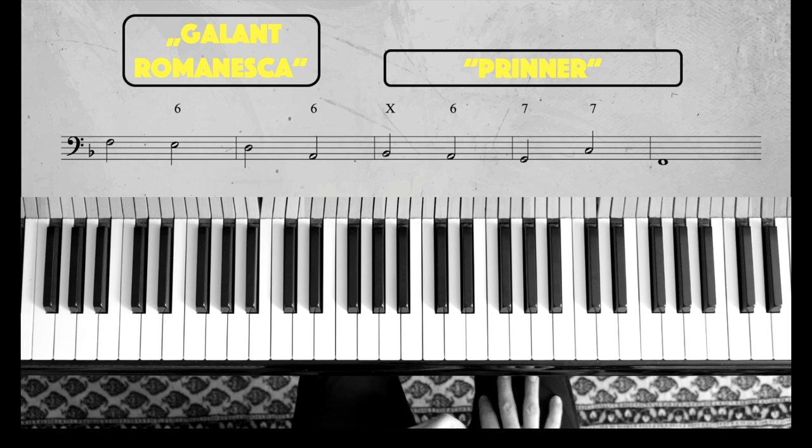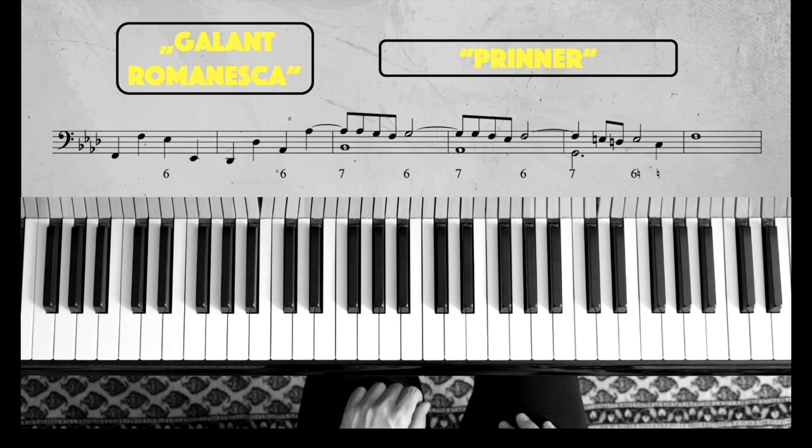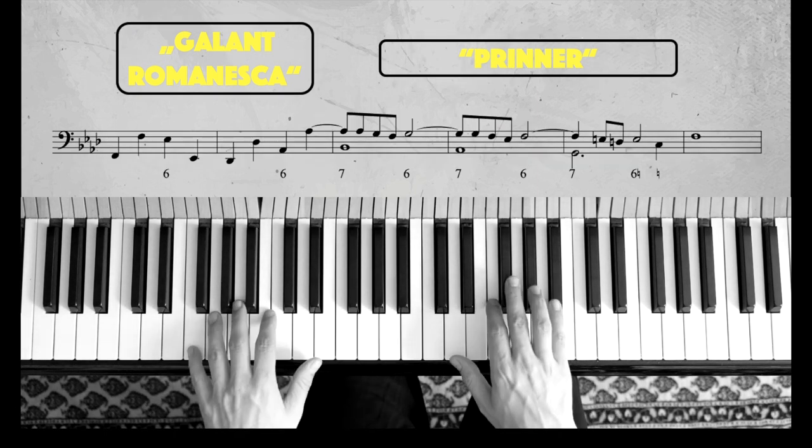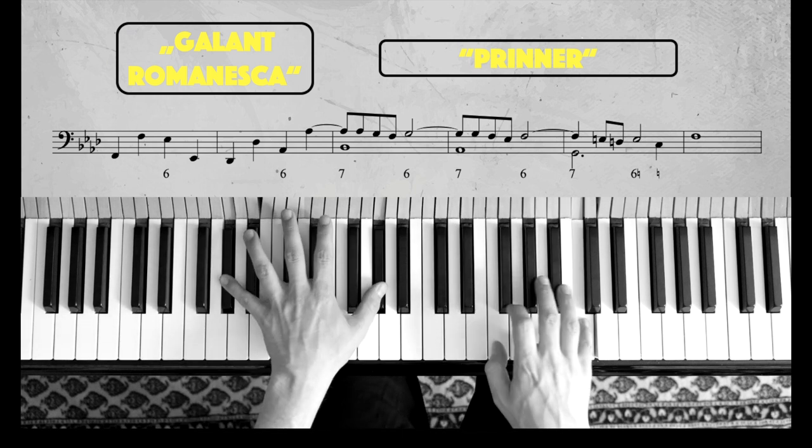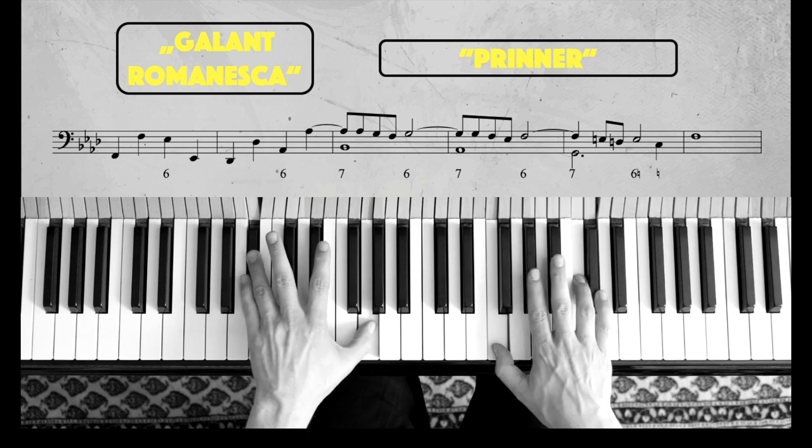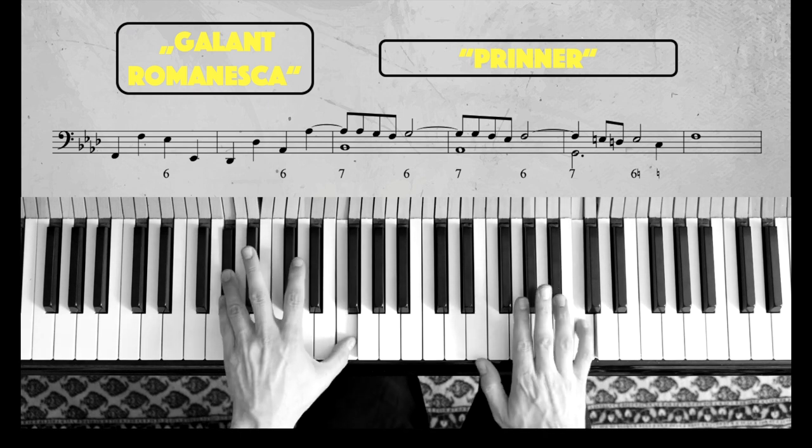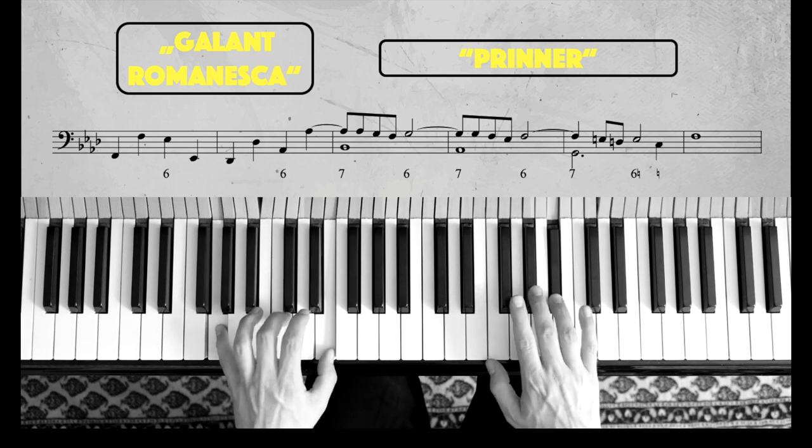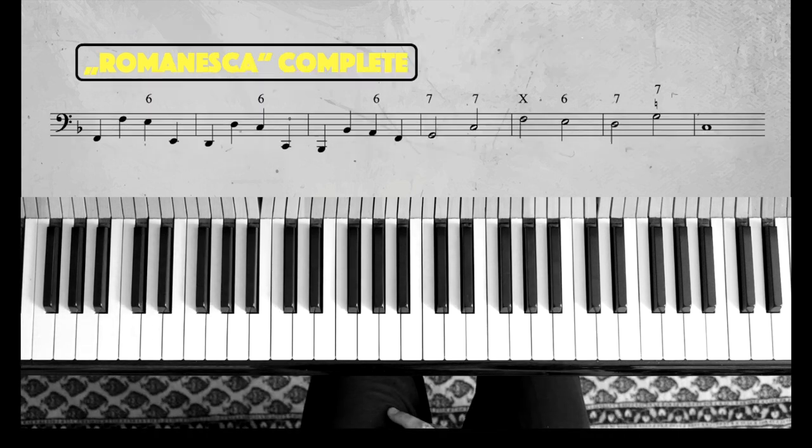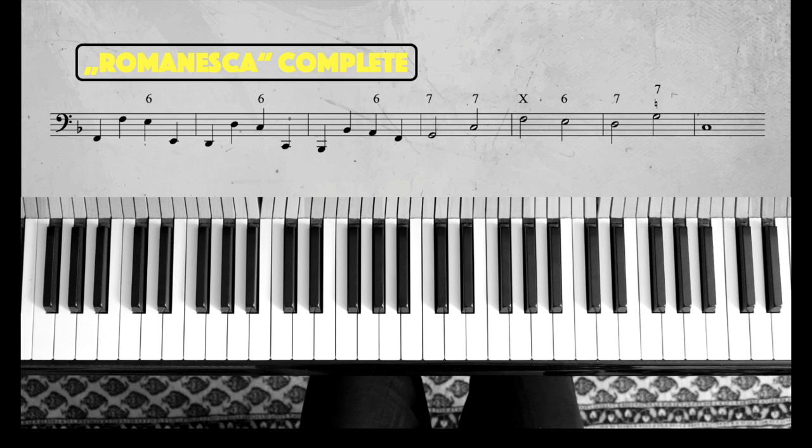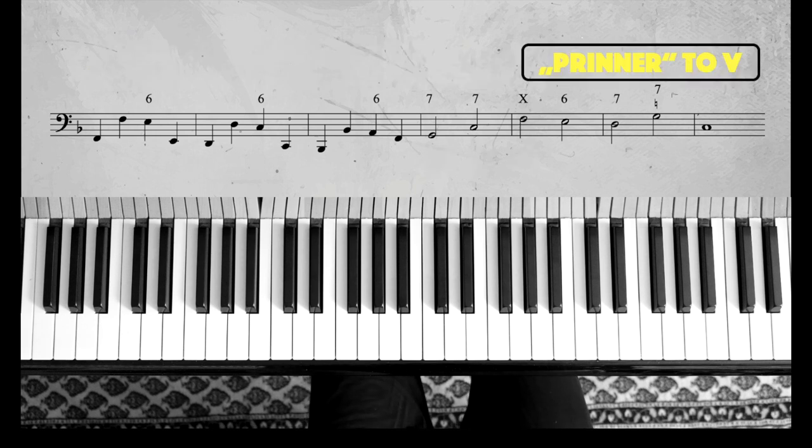Now, same thing in minor, but the Prinner is prolonged by 7-6 suspensions. Now I'm going to climb through the whole Stepwise Romanesca, attach a 2-5-1, and then modulate to the 5 as well by using the Prinner.